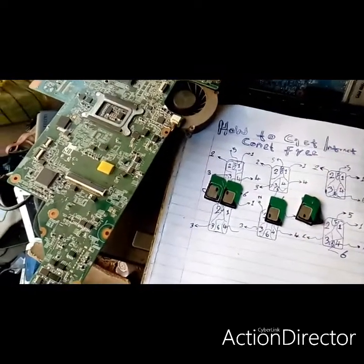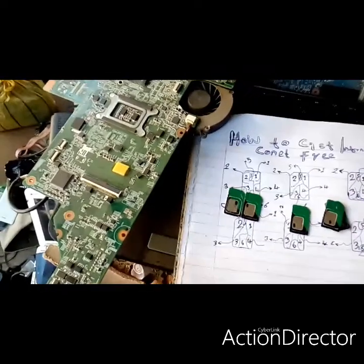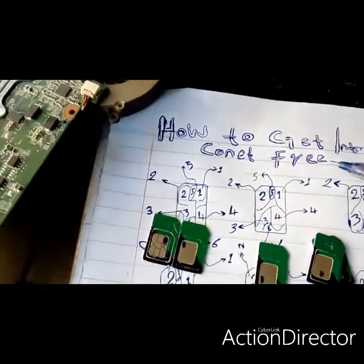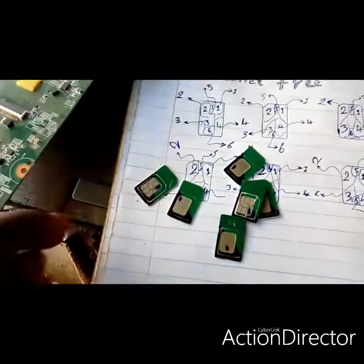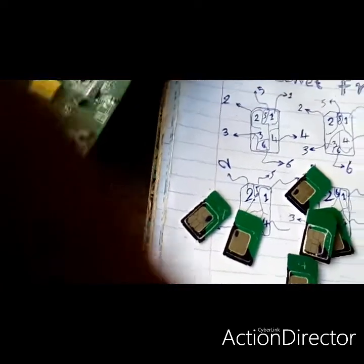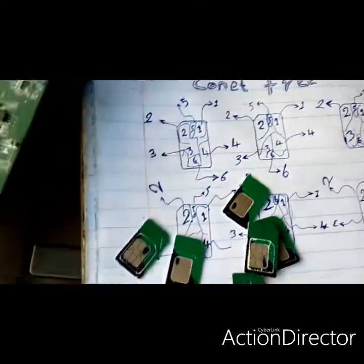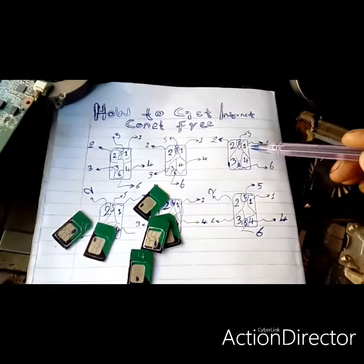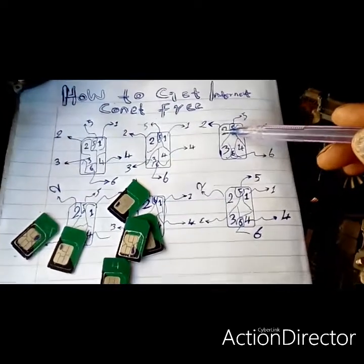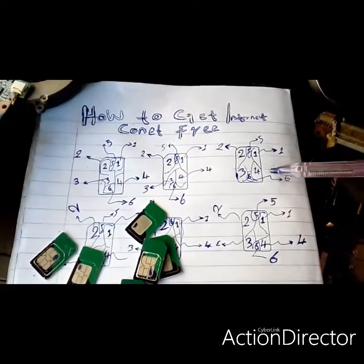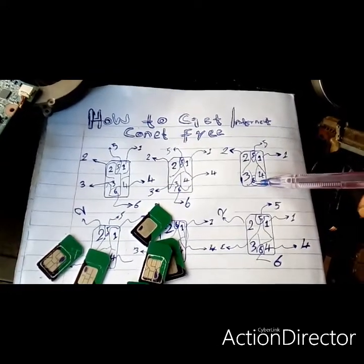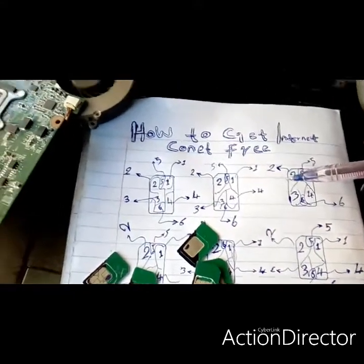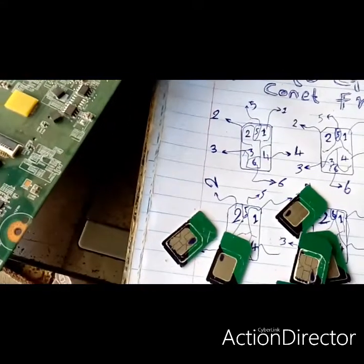If you want more information, subscribe to my channel on YouTube. I am trying to draw the SIM card from here — how to get internet connection free. I'll try to illustrate the SIM card, but because of the measurement it's not shown very well. This is partition 1, partition 2, partition 3, partition 4, partition 5, partition 6. I will try to explain how to get internet connection free and how to get SMS free.